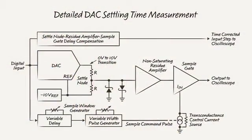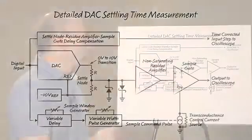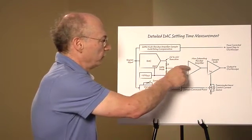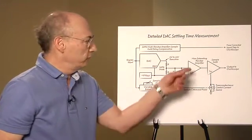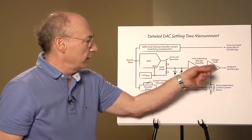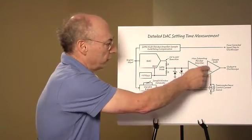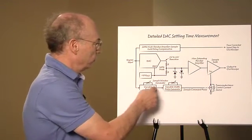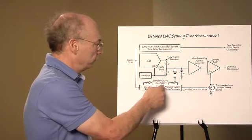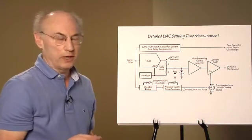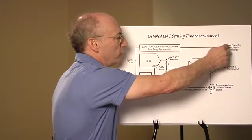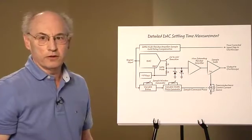Now we get into a little more detail of the measurement scheme. This is pretty much the same as the last slide. We've put the residue amplifier in front of another triangle. This sample gate triangle takes the place of the switch. It's really a transconductance controlled amplifier which is controlled by the sample command pulse which comes ultimately from the digital input through this sample window generator which is a variable delay in time. So we're going to have on channel one the time corrected input step and on channel two the settle signature.